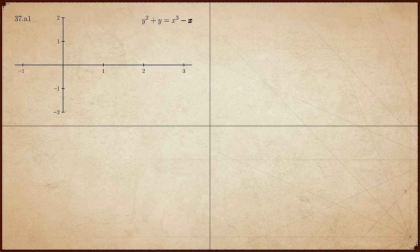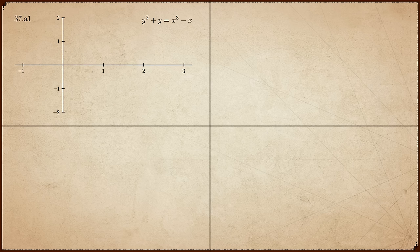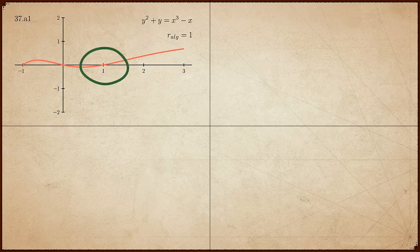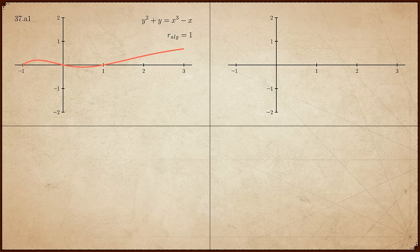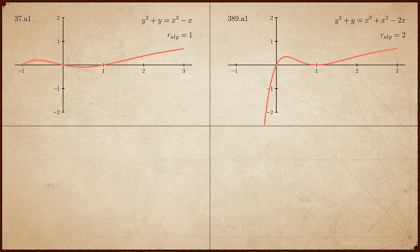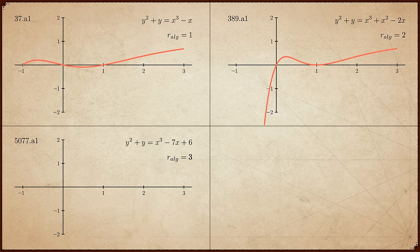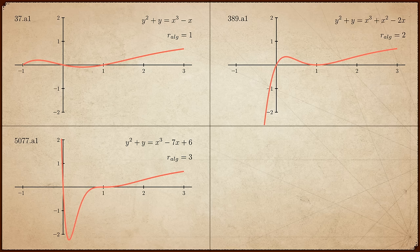OK, here is 37.a1. We just saw earlier that it has algebraic rank 1. Here is a curve of algebraic rank 2. And now, algebraic rank 3. And a curve of algebraic rank 4.